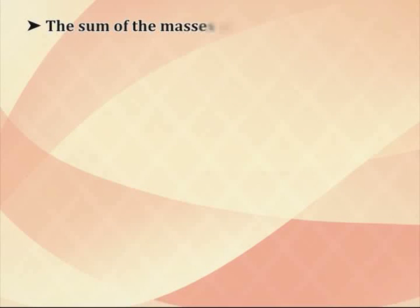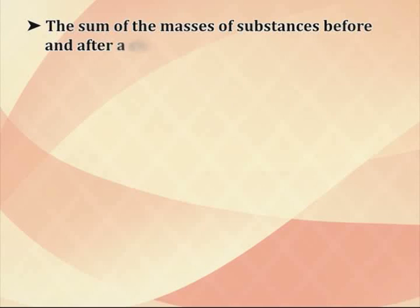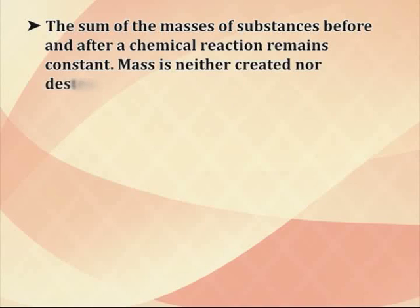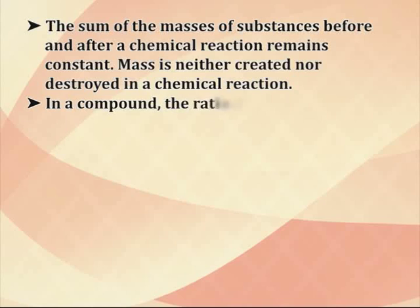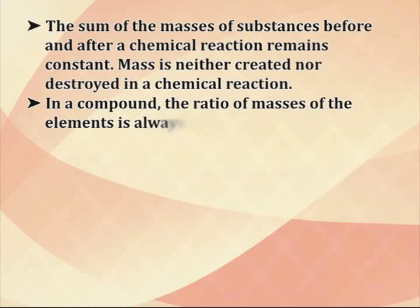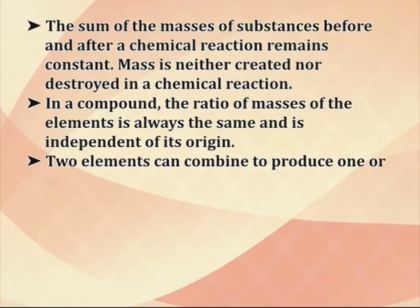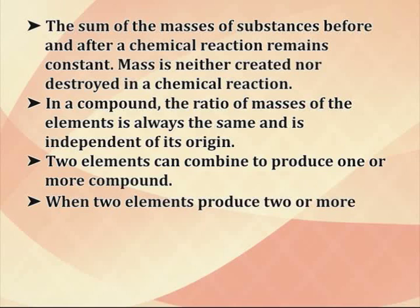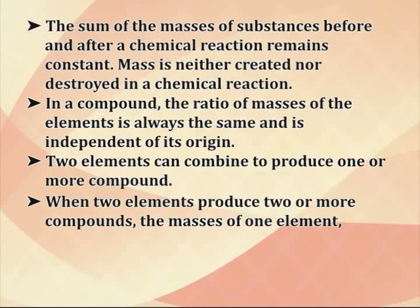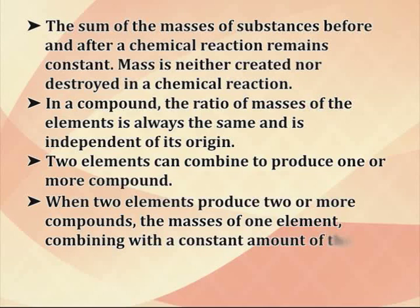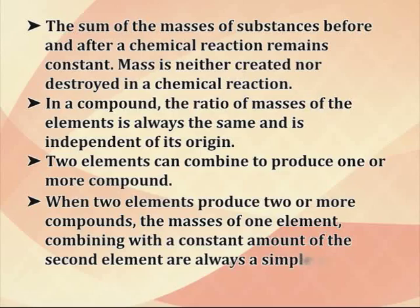The sum of the masses of substances before and after a chemical reaction remains constant — mass is neither created nor destroyed in a chemical reaction. In a compound, the ratio of masses of the elements is always the same and is independent of its origin. Two elements can combine to produce one or more than one compound, and when they produce two or more compounds, the masses of one element combining with a constant amount of the second element are always in a simple integral ratio.